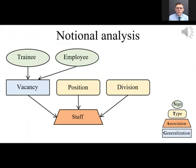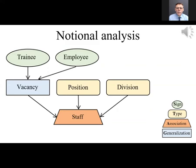Notional analysis consists in identifying notions and their abstractions used to describe a given subject domain. The abstractions of identification, association, and generalization are considered necessary and sufficient mental operations for isolating and transforming representations from the subject domain into notions. In the notional structure describing staffing: trainee and employee are notion signs shown as ovals; division and position are notion types shown as rounded rectangles; vacancy is notion generalization shown as a rectangle; and staff is notion association shown as a rhombus.